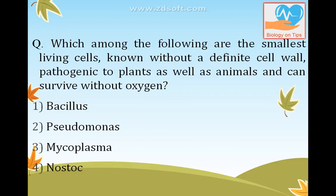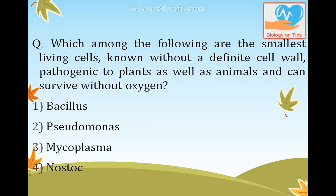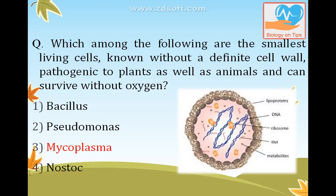Which among the following are the smallest living cells known, without a definite cell wall, pathogenic to plants as well as animals, and can survive without oxygen? The answer is Mycoplasma. Mycoplasma is also called PPLO — pleuro pneumonia like organisms. They do not have a definite cell wall, so they can assume any shape.